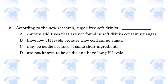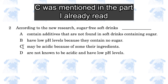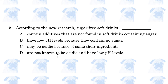Number 2: According to the new research, sugar-free soft drinks — A: contain additives not found in soft drinks containing sugar; B: have low pH levels because they contain no sugar; C: may be acidic because of their ingredients; D: are not known to be acidic and have low pH levels. The passage states these drinks have acidic additives and low pH levels, so the answer is C.